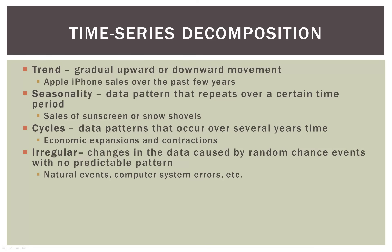And the last one is called irregular. These are changes in the data caused by random chance events that really don't have any predictable pattern — natural events like hurricanes or earthquakes, or computer system errors that just happened out of the blue. We'll look at one of those here in a minute. These are just random events that we can't really predict.